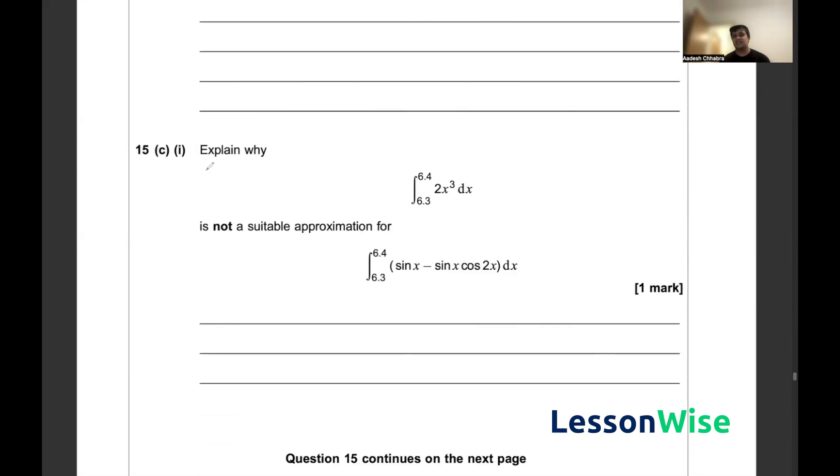For question 15c the first part asks us to explain why this integral is not a suitable approximation for the integral of sin x minus sin x cos 2x dx between the interval of 6.4 and 6.3.